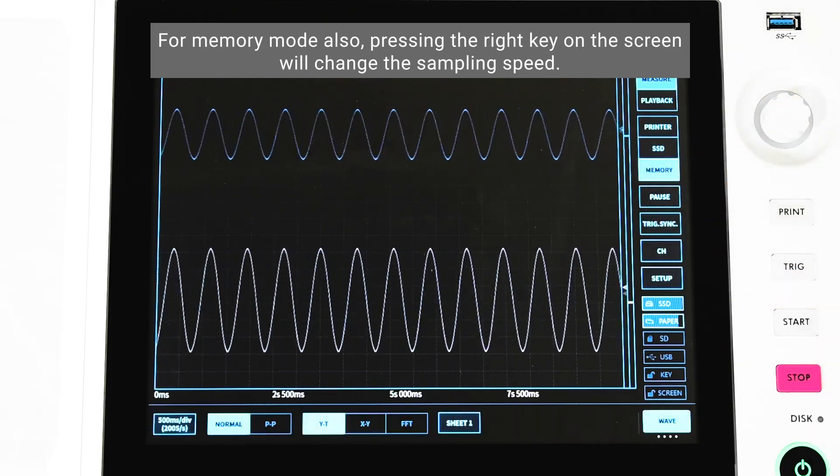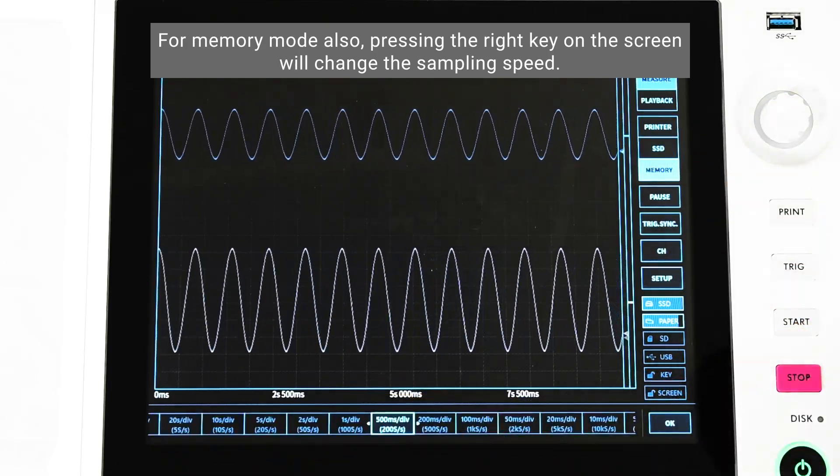For memory mode also, pressing the right key on the screen will change the sampling speed.